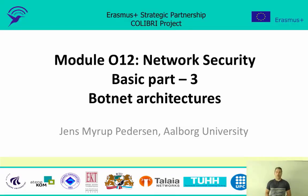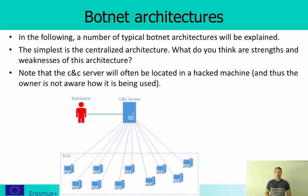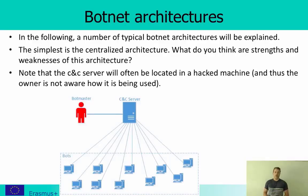Welcome to network security, the basic part number 3. Here we will be talking about botnet architectures. The simplest model is a centralized architecture, where there is a command-and-control (C&C) server controlled by the bot master — though often located on a hacked machine whose owner is unaware. This model is simple but not very useful in real life.